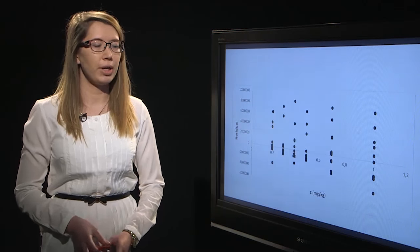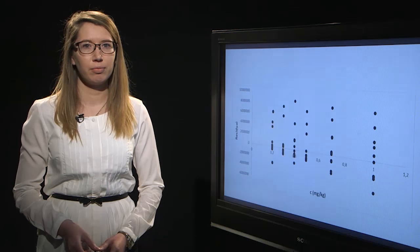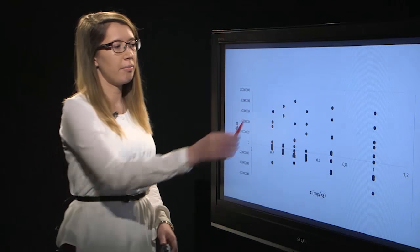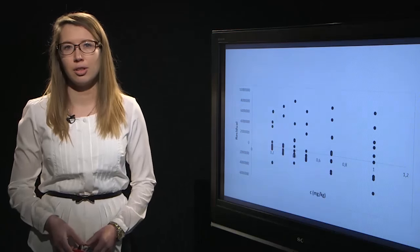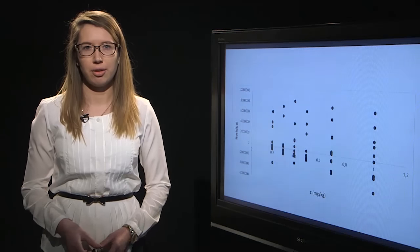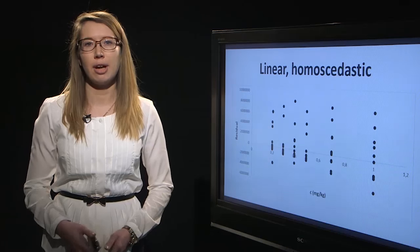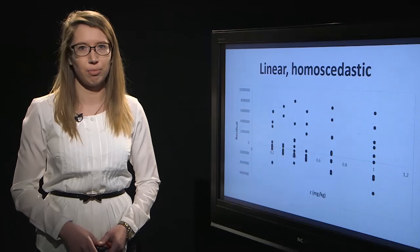From this graph, we can see that the residuals are placed randomly. Also, we see that the deviation of the residuals is not dependent on the concentration of analyte. Therefore, we can say that our calibration graph is linear and the data is homoscedastic. We can use a simple linear regression model.